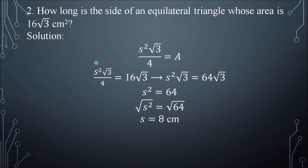Number 2. How long is the side of an equilateral triangle whose area is 16√3 cm²? Again, this is the formula. Now plug in or substitute the area 16√3 for A.